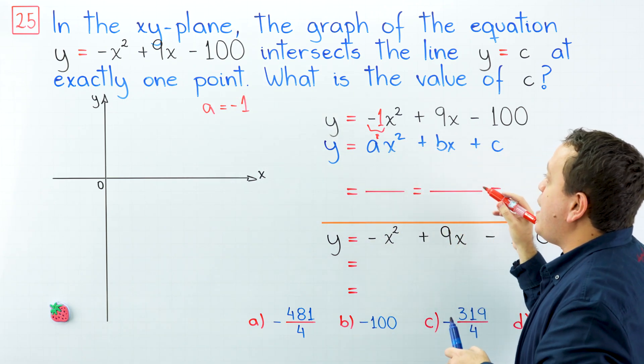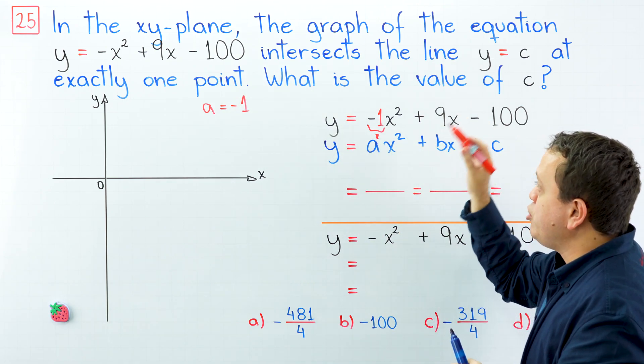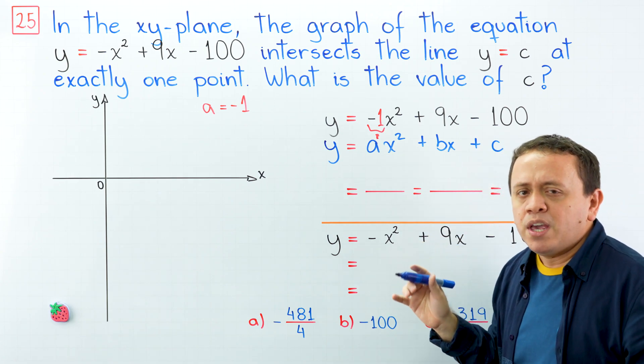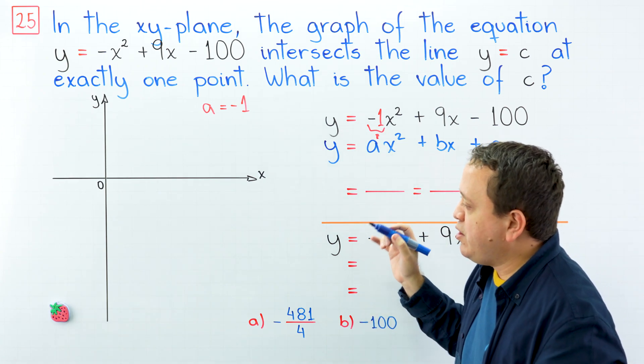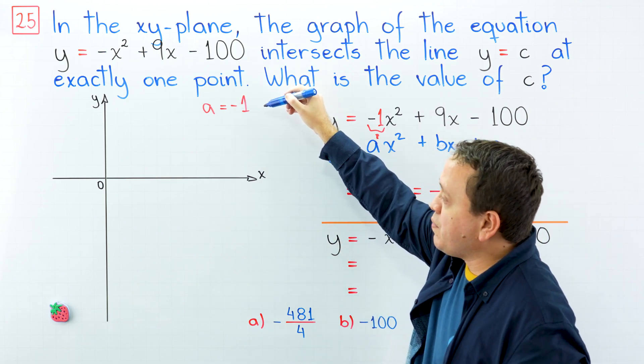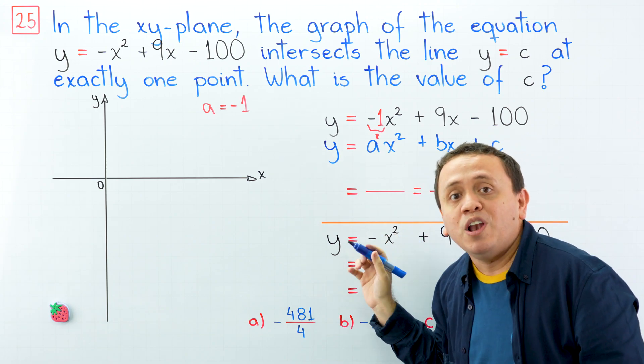Now we're going to find the graph of this quadratic equation. Never forget that the graph of a quadratic equation is a parabola, and don't worry about the exact location of the parabola. What really matters here is that the value of a is negative. Therefore, the parabola will open downward.